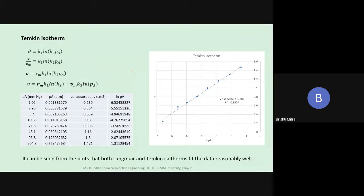Next is the Temkin isotherm, where theta equals K₁ · ln(K₂ · P_A). Since we don't have theta directly, we write V/V_m equals this expression, so V equals V_m · K₁ · ln(K₂ · P_A). Expanding the ln term: V equals V_m · K₁ · ln(K₂) plus V_m · K₁ · ln(P_A). Therefore, we plot V on the y-axis versus ln(P_A) on the x-axis.